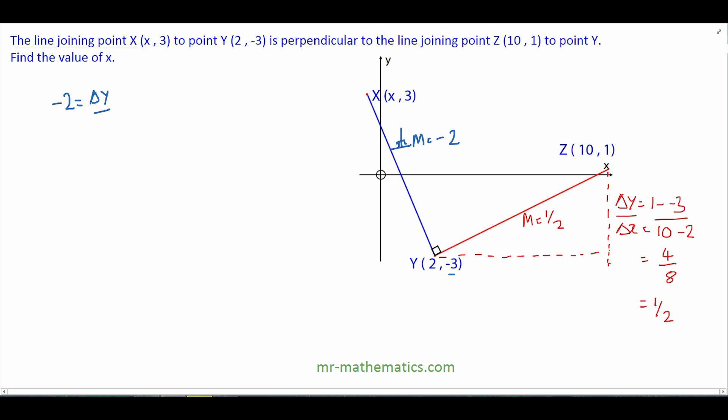That means negative 2 is equal to the change in y divided by the change in x of the blue line. So negative 2 equals negative 3 take away 3, which are the y coordinates, over 2 minus x.